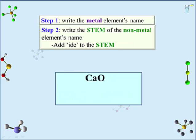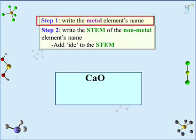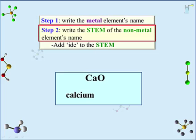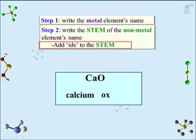A final example uses CaO. Step 1: Ca is calcium. The stem of oxygen is 'ox,' and adding '-ide' gives 'oxide.' CaO is calcium oxide. There is a lot of similarity between naming the anion here and naming the second element in a molecule — both use the stem of the element name and add '-ide.' The only difference is that in the molecule we add a Greek prefix.